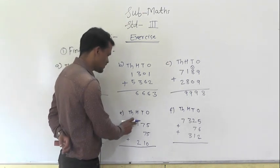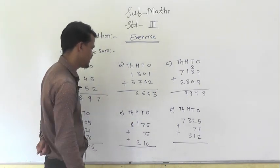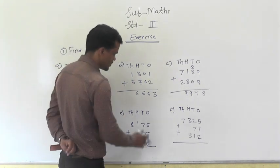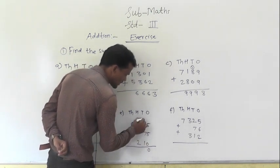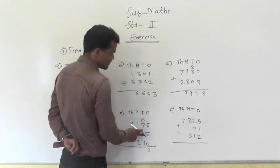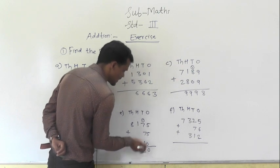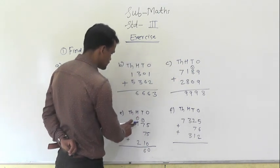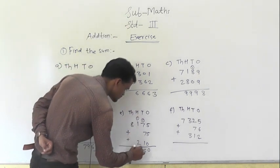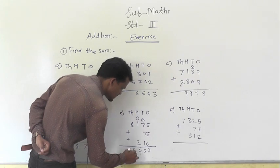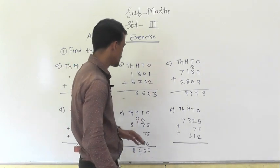Next: 8175 plus 75 plus 210. Start from the ones place. 5 plus 5 plus 0 is 10, write 0 here and 1 carry to the tens place. 7 plus 7 is 14, plus 1 carry is 15, plus 1 is 16, write 6 here and 1 carry to the hundreds place. 1 plus 2 plus 1 carry is 4. At the thousands place, 8. So the answer is 8460.